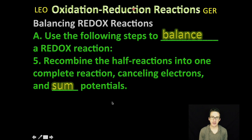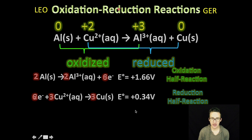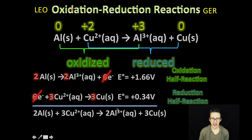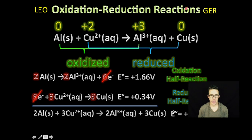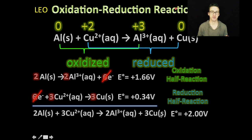My fifth and final step is to recombine the half reactions into one complete reaction, canceling electrons and summing the potentials to get the potential for the overall reaction. The six moles of electrons cancel out. When I sum the reactions together, I end up with coefficients of two, three, two, and three. The overall potential for this reaction is positive 2.00 volts — I've just added my oxidation potential to my reduction potential. So now my reaction is not only balanced for mass, but it is also balanced for charge.